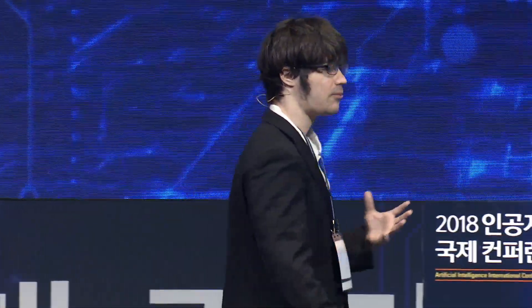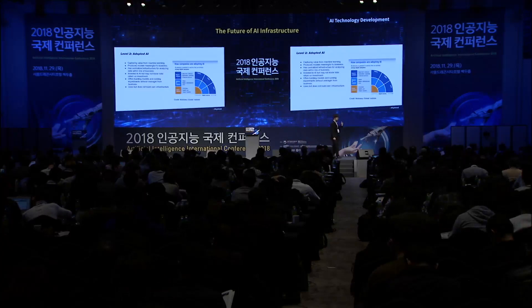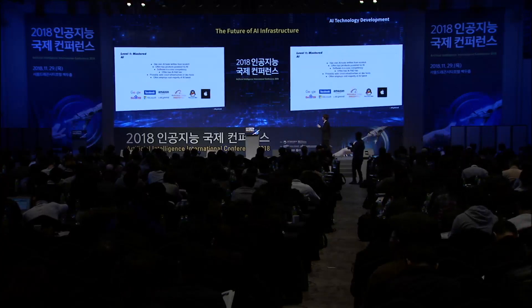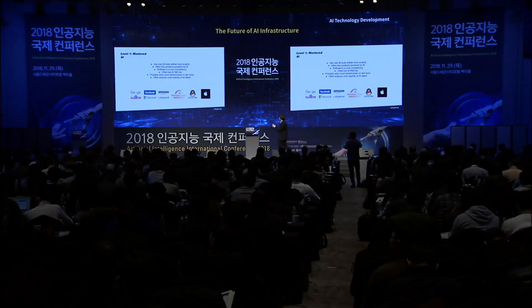Tier two is where most companies should strive to get to, at least. These companies have modern, basic software engineering practices built into their processes — good quality assurance, centralized data warehouses, and proper procurement of data. Sometimes it might take months to even get data for your basic machine learning problem, especially with regulations like GDPR. You don't need to be Google, Tencent, or Alibaba. You don't need to build your own deep learning framework. You can use the widely available tools out there.